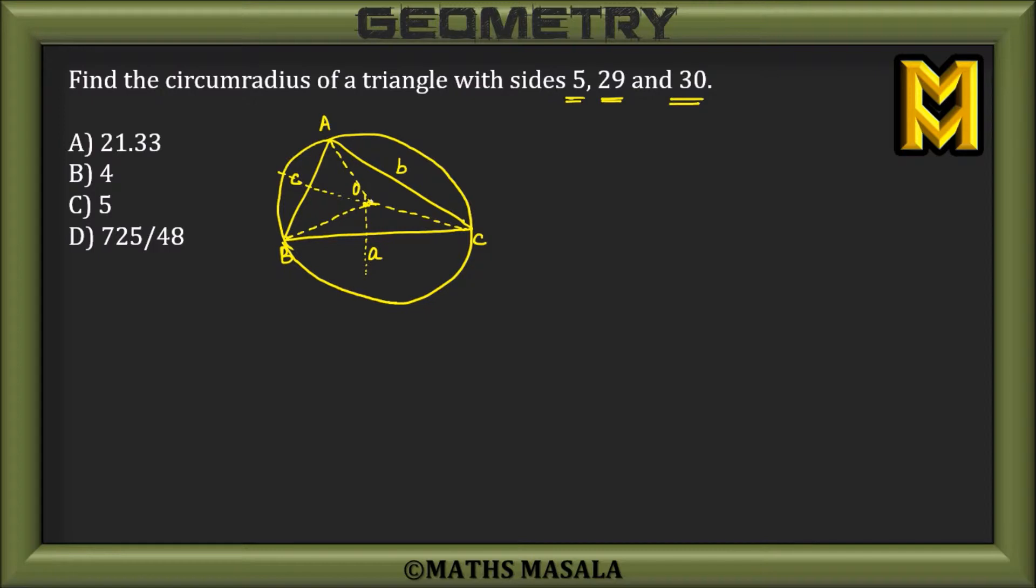figure that would look something like this. Now, if O is the center of the circle, then I can say angle BOC should be twice of angle A. Why? Because a circle